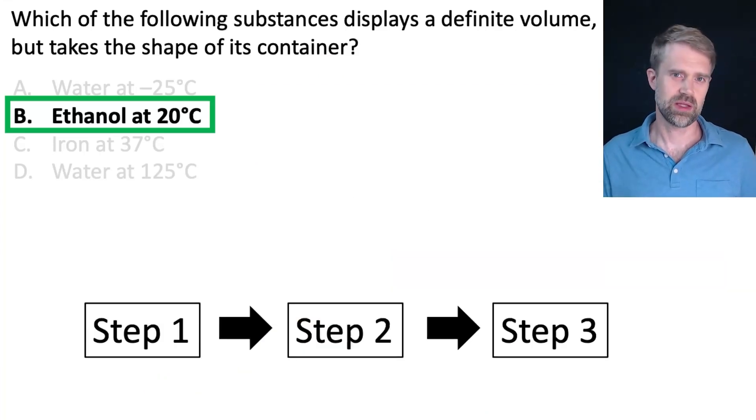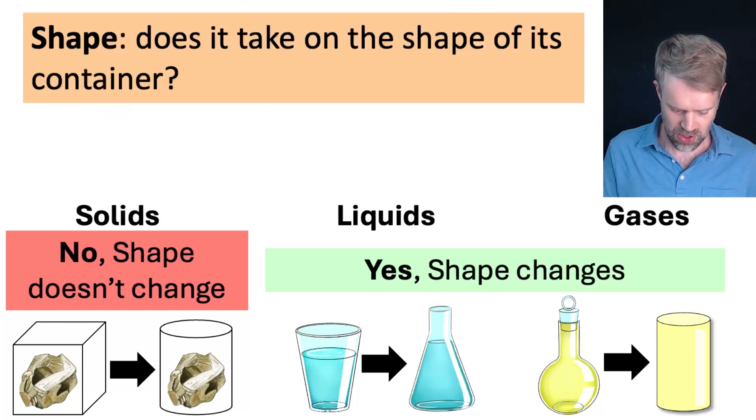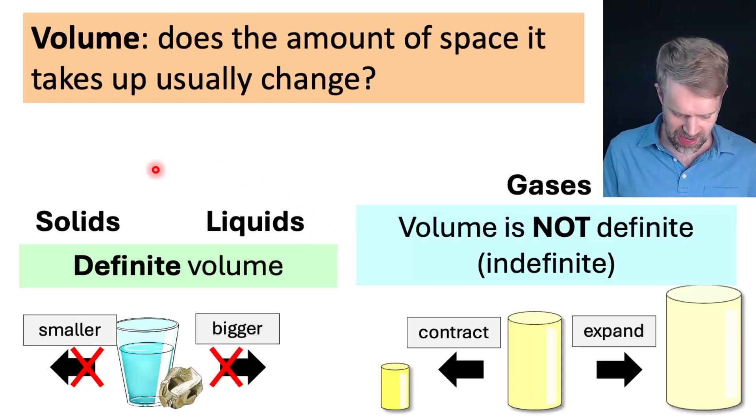I hope this was helpful to see how sometimes you have to walk through many different steps in order to answer TEAS questions. Now, in review, here are some of the things you want to make sure you know for the TEAS. First, shape. For solid, liquid, and gas, does it take on the shape of its container? For liquids and gases, yes. Their shape changes. They take on the shape of their container. But for solids, no. How about volume for solids, liquids, and gases? Solids and liquids have a definite volume. They don't usually get bigger or smaller on their own. But volume for a gas is not definite. The amount of space a gas takes up can easily change. And if something is not definite, we can also say that it is indefinite. So the volume of gases is indefinite.